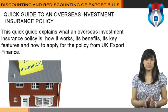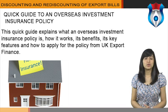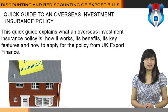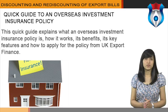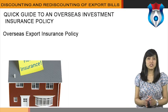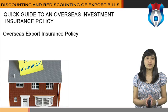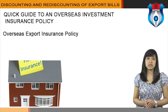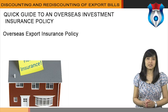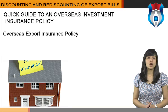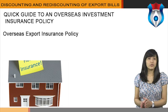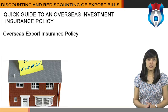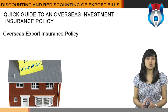This quick guide explains what an overseas investment insurance policy is, how it works, its benefits, its key features, and how to apply for the policy from UK Export Finance. An overseas investment insurance policy covers the risk of loss resulting from certain political events in connection with an investment made by an investor in the United Kingdom in an enterprise outside the United Kingdom. The policy can also cover losses arising in connection with a guarantee given by the insured in respect of an investment made by another person in an enterprise outside the United Kingdom in which the insured has an interest.